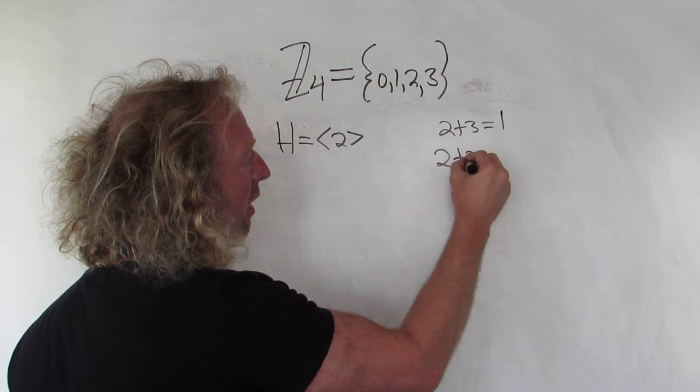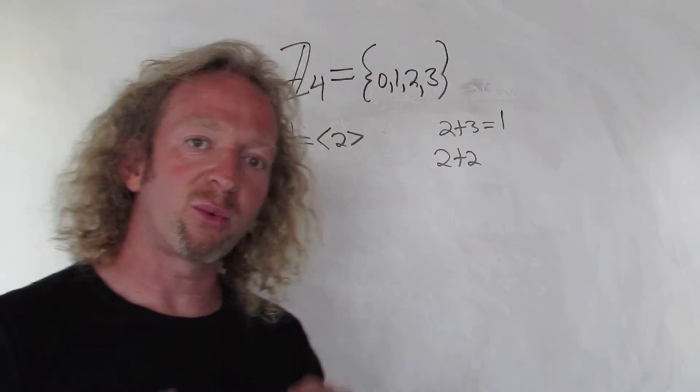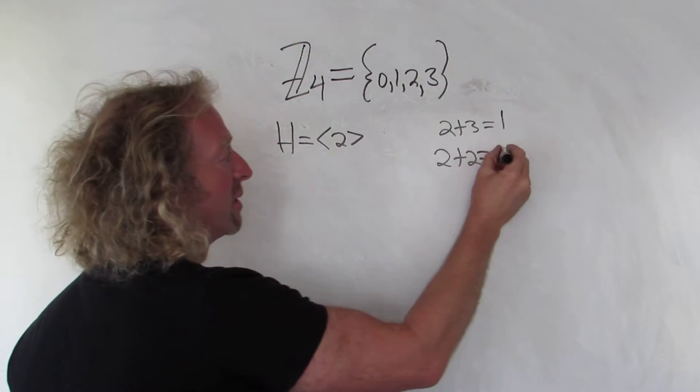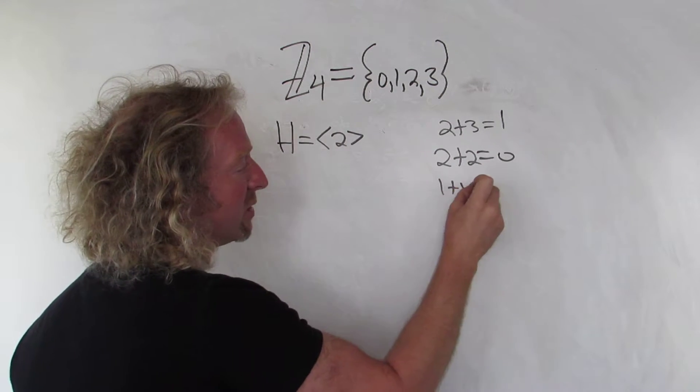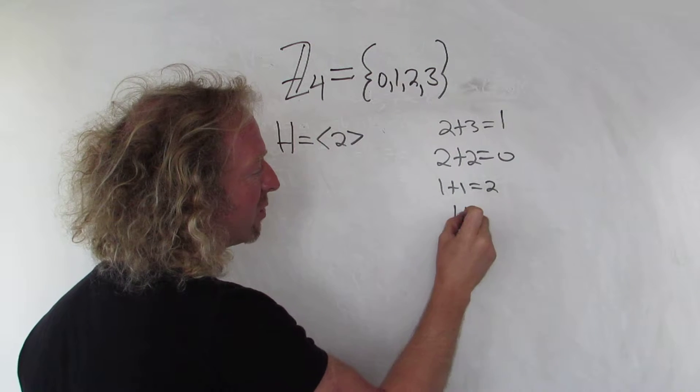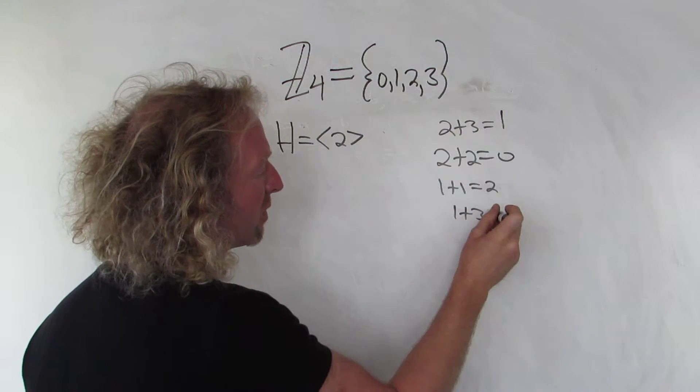2 plus 2 is 4, but 4 goes into 4 one time, the remainder is 0, so 2 plus 2 is equal to 0 in this group. 1 plus 1 is 2, 1 plus 3, well that's 4, but we know 4 is equal to 0, etc.